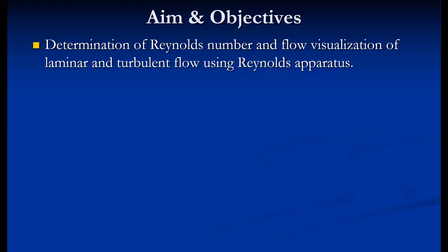As far as the aim and objectives of this experiment are concerned, in this experiment we are going to visualize the flow based on the characteristics of laminar and turbulent flow using Reynolds apparatus. At the same time, we will validate that flow by calculating the Reynolds number — determination of Reynolds number and flow visualization of laminar and turbulent flow using Reynolds apparatus. This is the aim of the experiment.